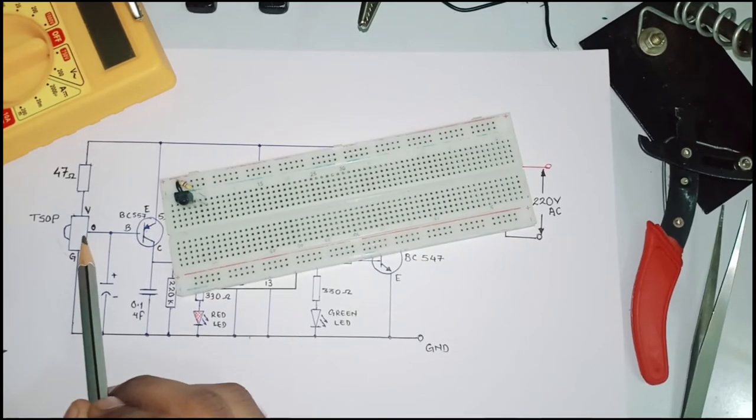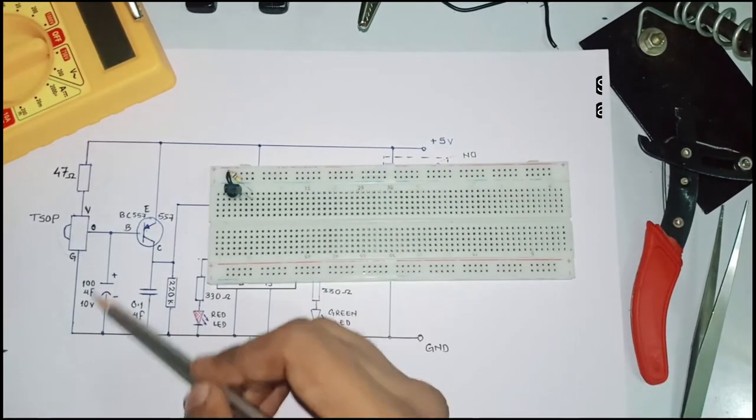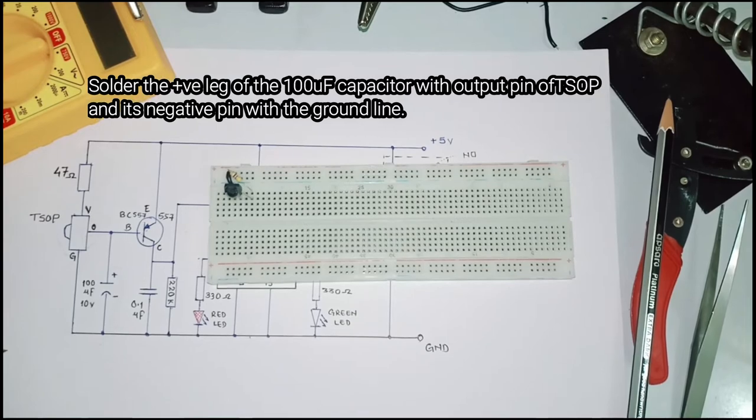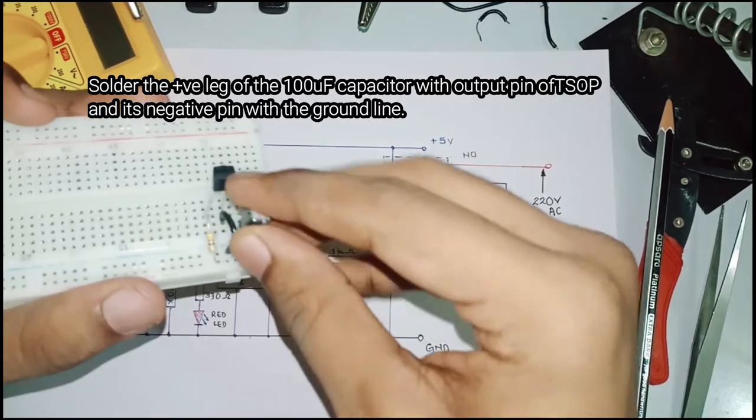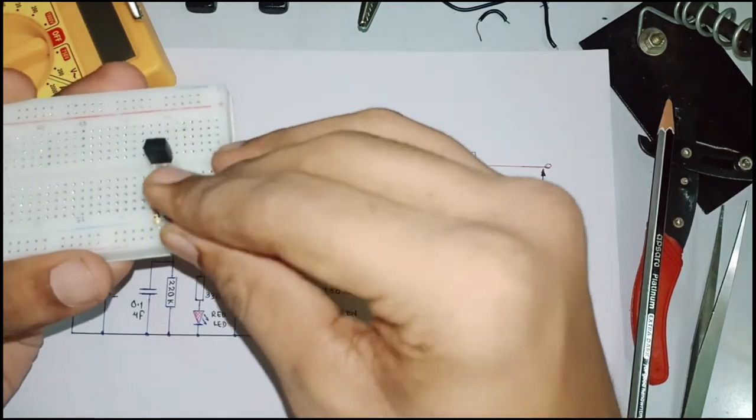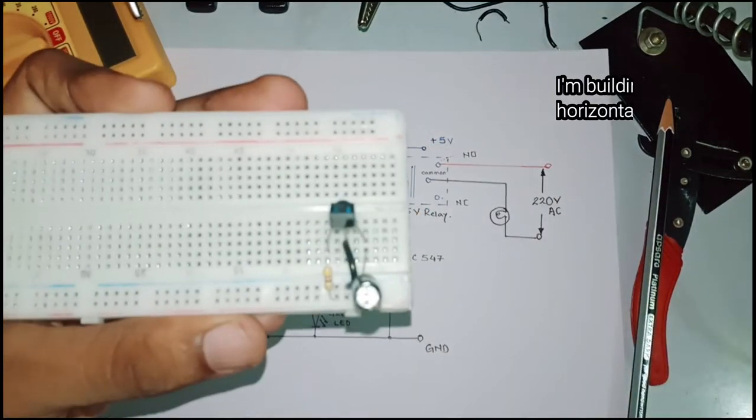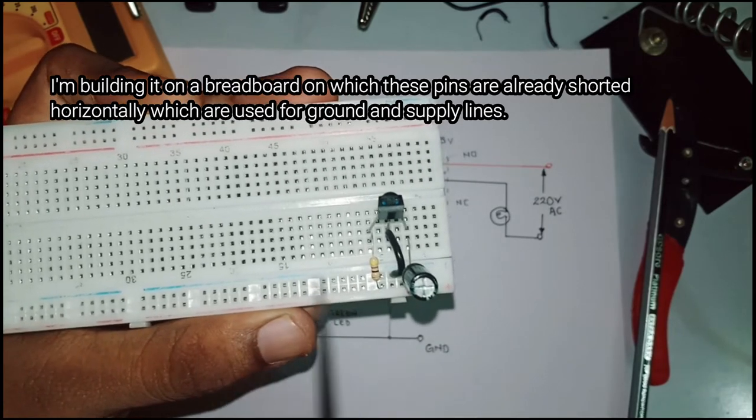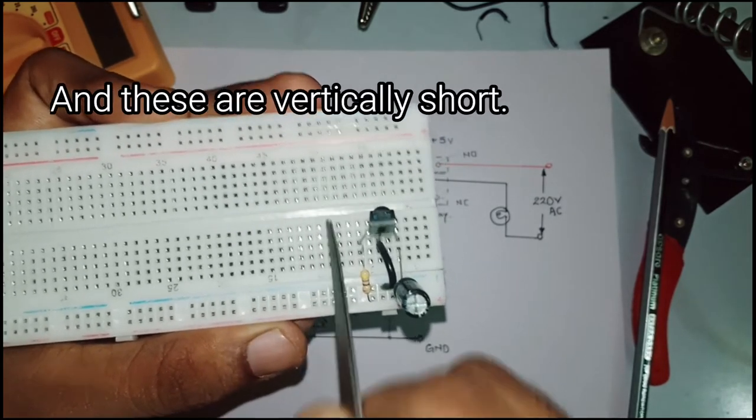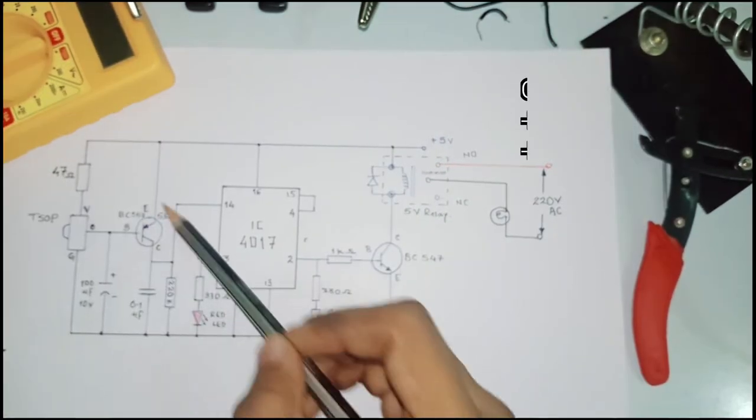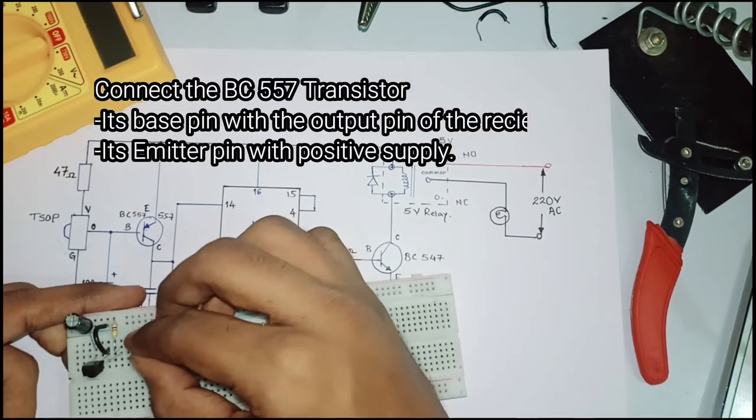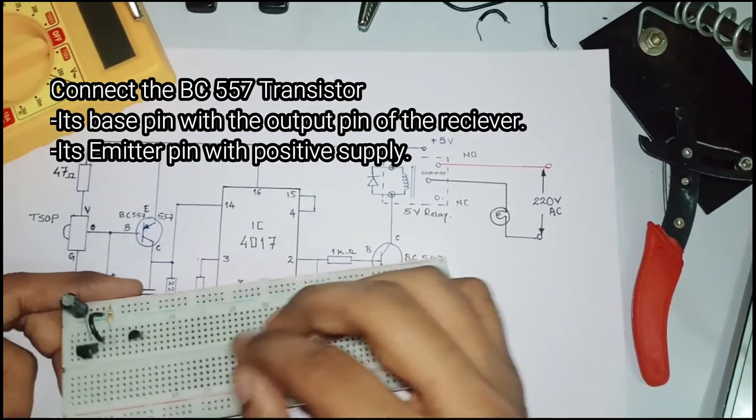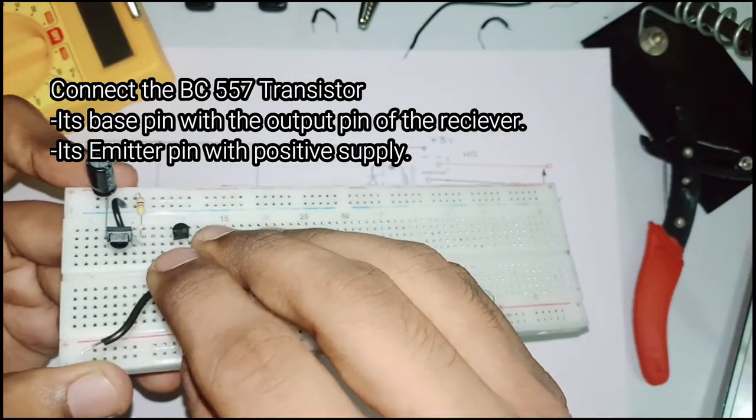The output of this receiver is active low, which means that this receiver is going to give you continuous high output when it is connected to the supply. But when it is going to detect 38 kilohertz signal, it is going to demodulate it and give you active low output. So whenever you press a button on your remote, the remote is going to send modulated signals towards this receiver, and this receiver is going to demodulate it and then give you the output.